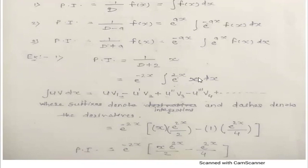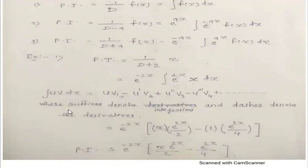To solve the integration of e^(2x) · x, use the UV rule. The general formula is: ∫u·v dx = u·v₁ − u'·v₂ + u''·v₃ − u'''·v₄ + ..., where suffixes denote integrations and dashes denote derivatives.